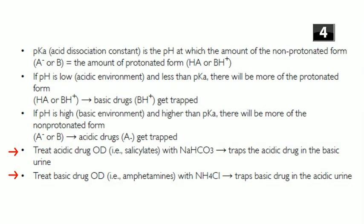To treat an overdose of acidic drugs such as aspirin (salicylic acid), you use sodium bicarbonate. The bicarb is excreted in the urine, making it alkaline, which traps the weak acid. That's how you eliminate an acidic drug like aspirin — alkalinize the urine with sodium bicarbonate to trap it so it can't be reabsorbed and gets urinated out.